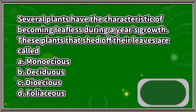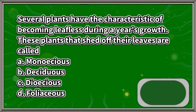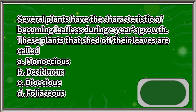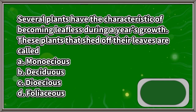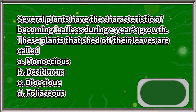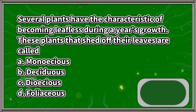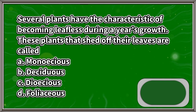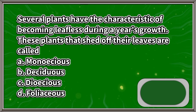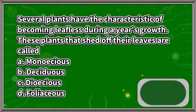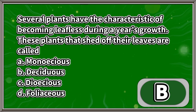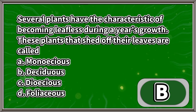Several plants have the characteristic of becoming leafless during a year's growth. These plants that shed off their leaves are called: A. Monoecious, B. Deciduous, C. Dioecious, D. Foliaceous. The answer is letter B.